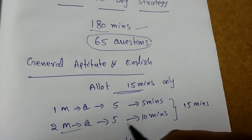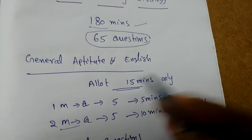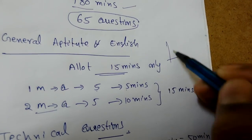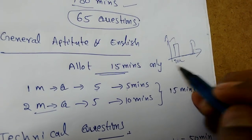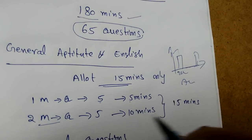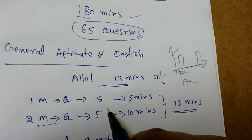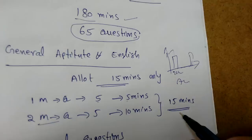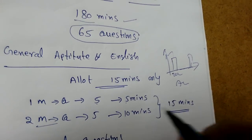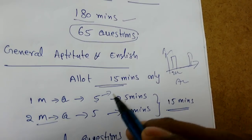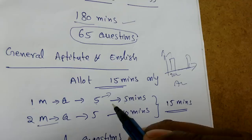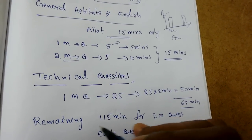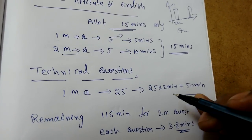Some aptitude questions may take only 10 to 50 seconds, while two-mark questions may take up to two minutes each. Sometimes there are bar graph questions where data from years like 2002 or 2015 is given and you have to find an average - that may take up to two minutes maximum. Complete the general aptitude and English section within 15 minutes, whether you do it at the start or the end. Don't go beyond 15 minutes, because wasting five minutes there means losing time on technical questions.